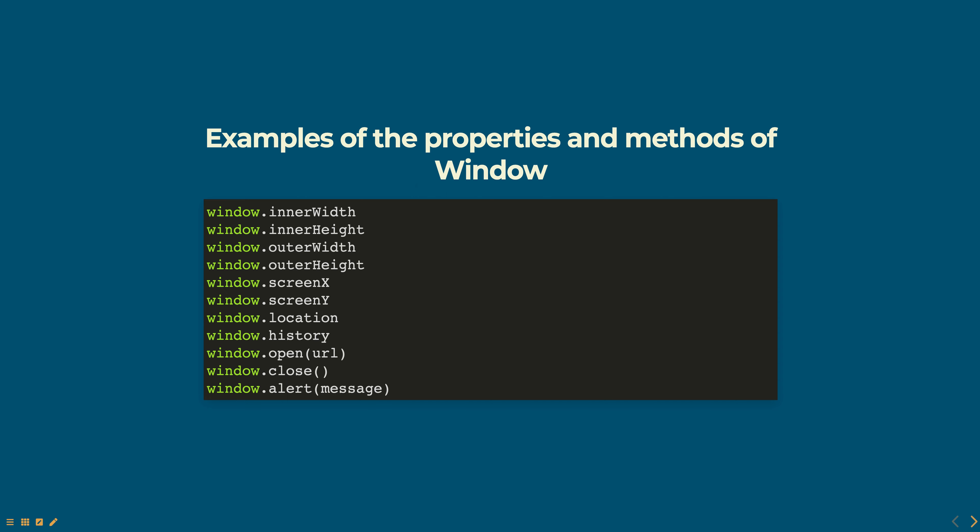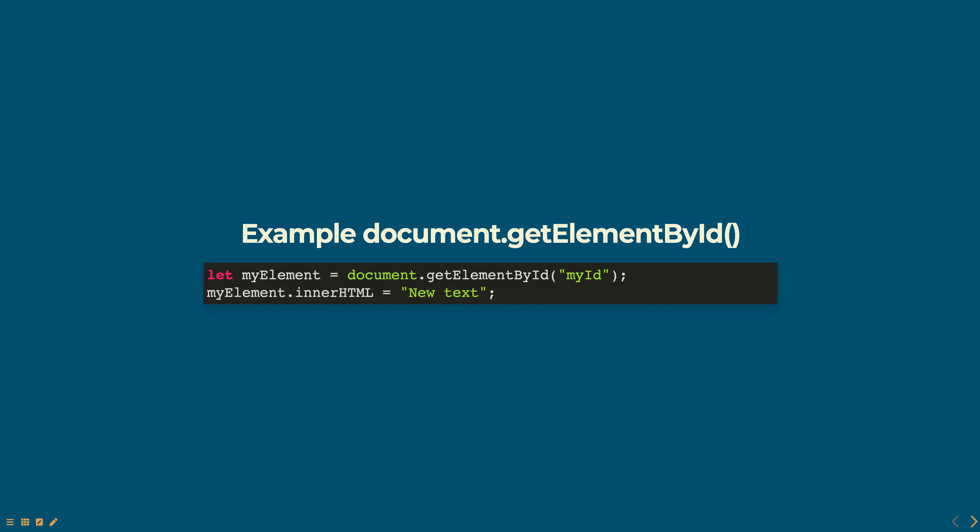Window.open opens a new window with a specified URL. Window.close closes the current window. Window.alert displays an alert box with a specified message. For example, here's how you could use the document.getElementById method to change the text of an element with the ID myId. Hope this was helpful, thank you for watching.